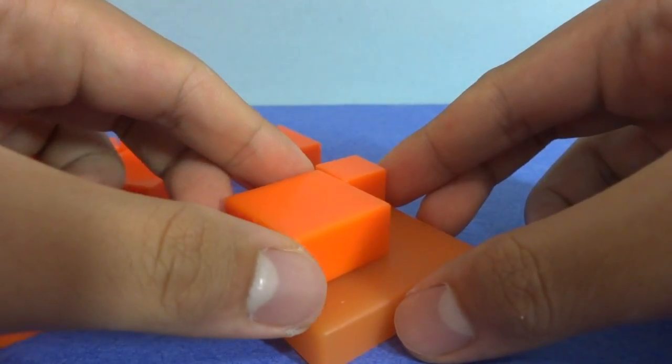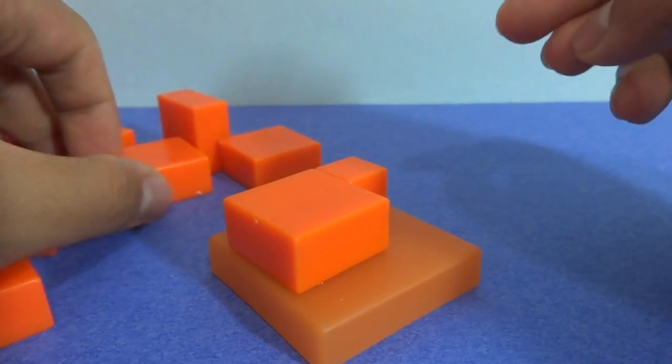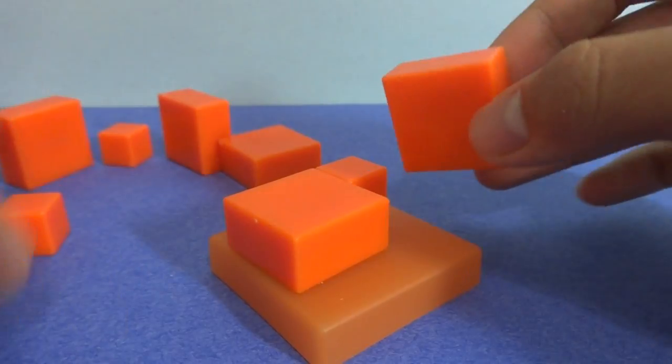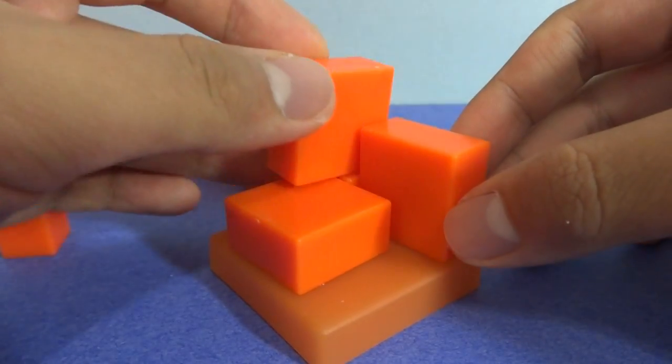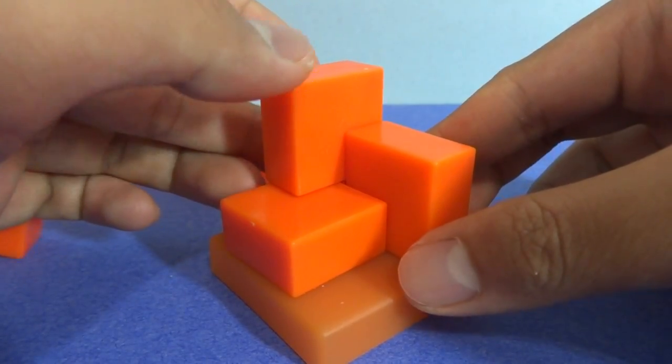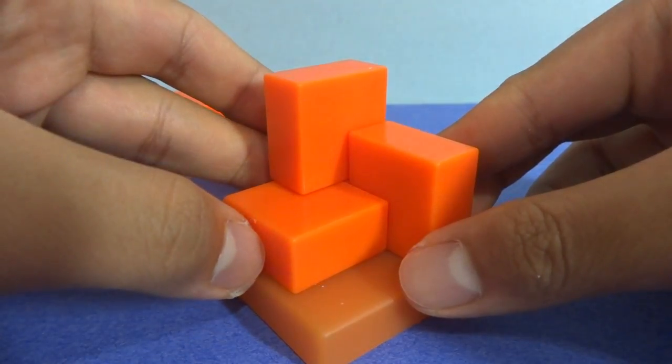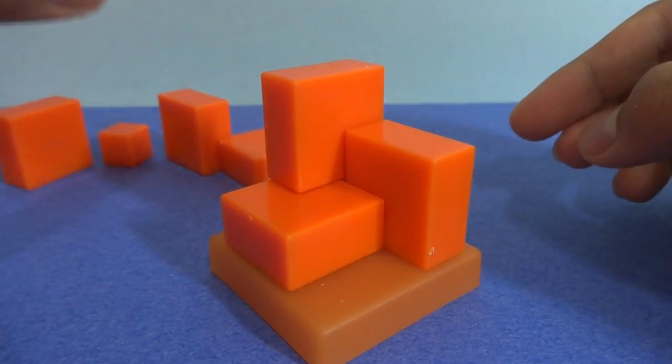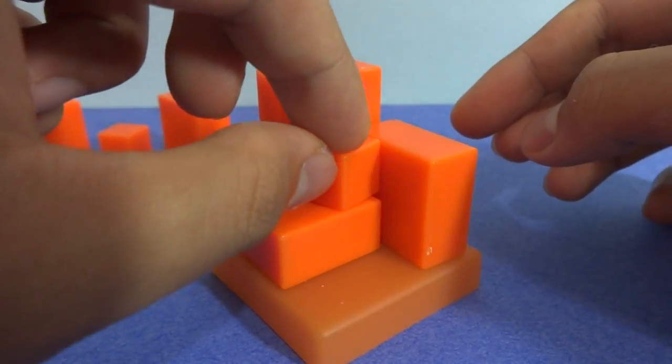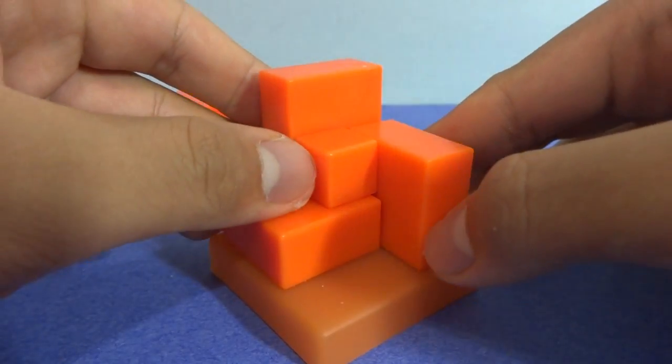Go like this. And assemble that like so. So you have this nice little spirally looking shape. Fill in this little gap here with a cube.